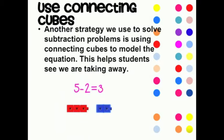The final subtraction strategy we learn in kindergarten is using connecting cubes to model the equation. When we take apart cube trains, this models decomposing numbers, which shows students the concept of taking away. This helps students see a number is broken into two parts, and if they know one part, then they can solve to find the other part to create the whole.